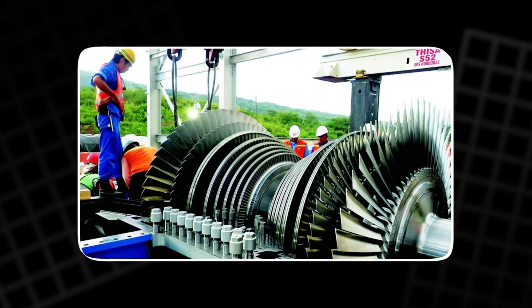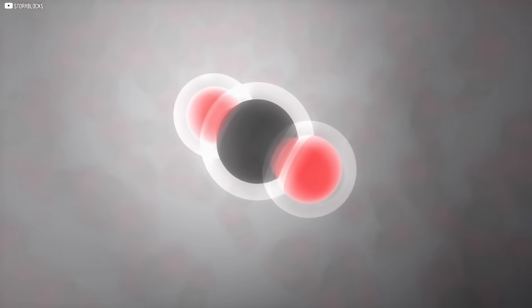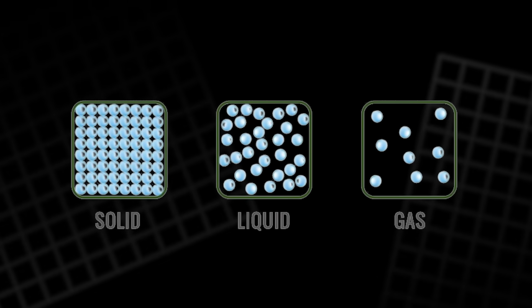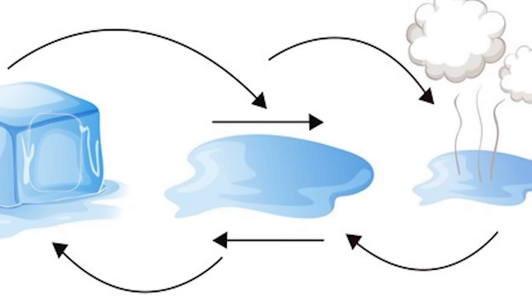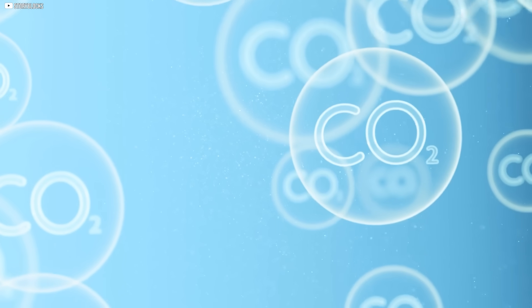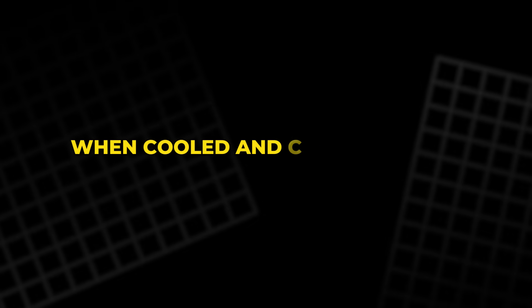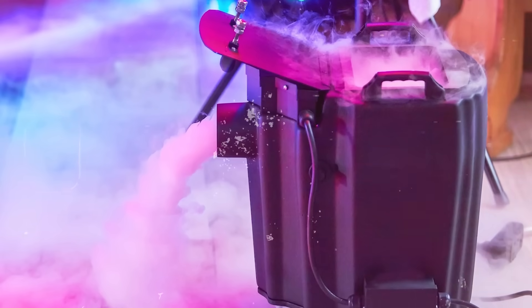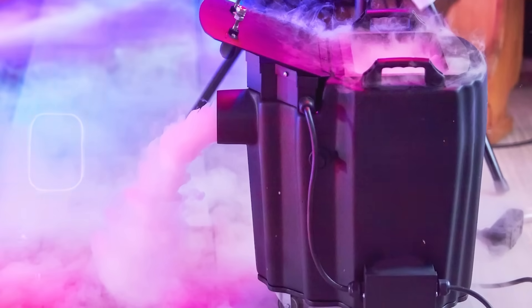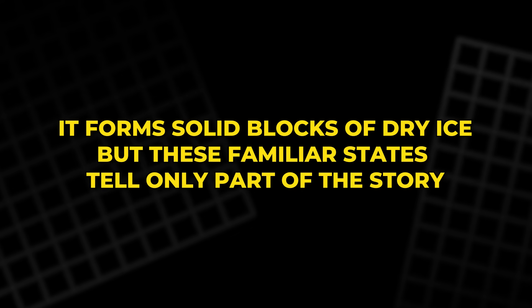To begin, it helps to think about what happens to matter under different conditions. Most of us are familiar with the three common phases: solid, liquid, and gas. Water, for instance, turns from ice to liquid and then to steam depending on temperature and pressure. Carbon dioxide, too, shifts between phases in the same way. At room temperature and normal atmospheric pressure, it exists as a gas. When cooled and compressed, it becomes a liquid. And at its coldest, as many of us know from Halloween fog machines or science demonstrations, it forms solid blocks of dry ice. But these familiar states tell only part of the story.